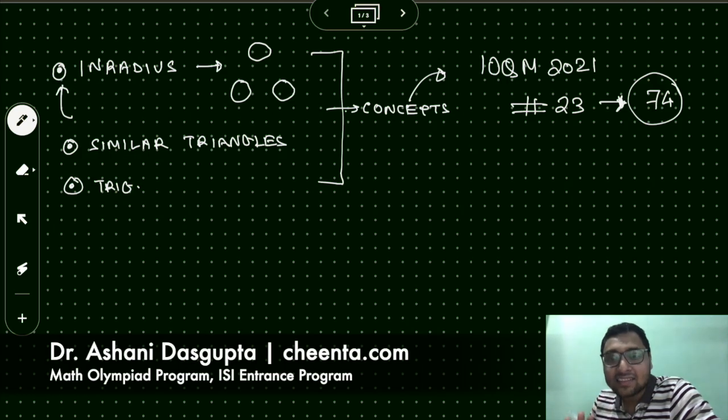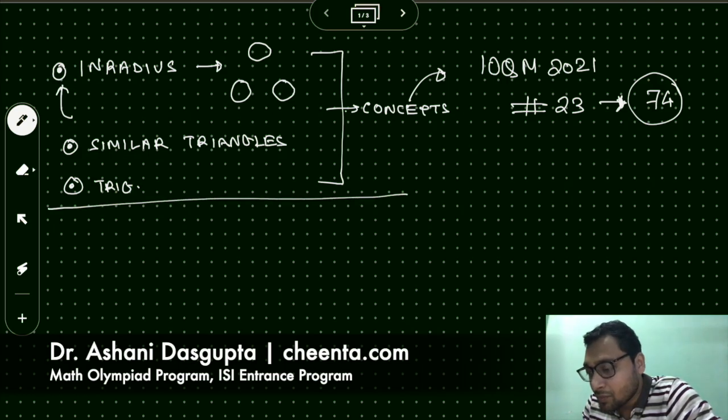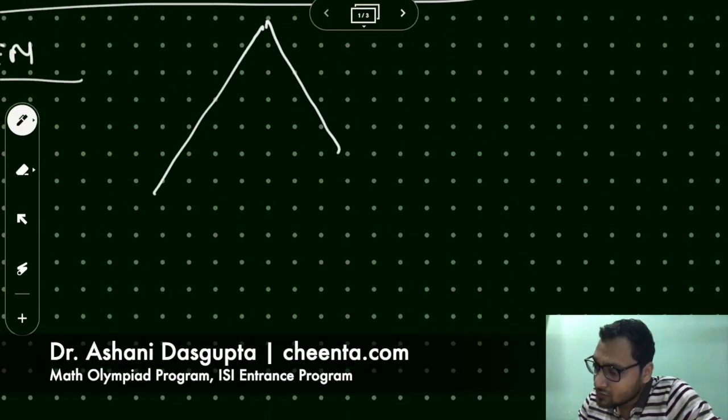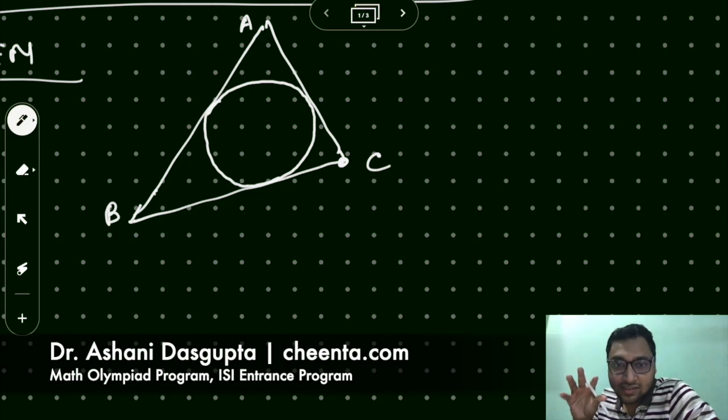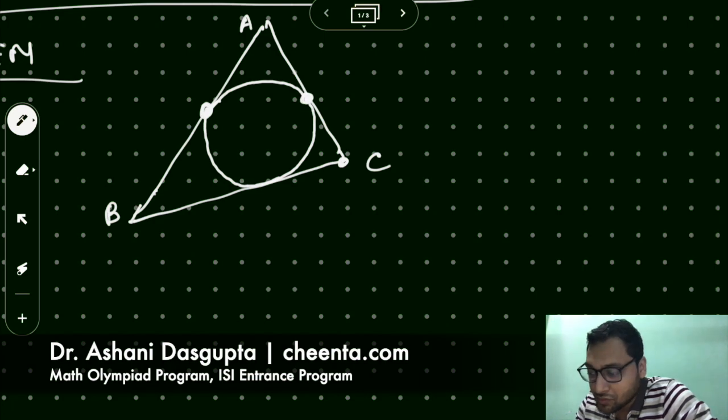So first as motivation let me tell you what the problem is. We have a triangle, I can zoom it a little bit more. Let's call it ABC. It's a scalene triangle and we have a circle. If you don't know what an in circle is, it's very simple. You have a circle to which the sides of the triangles are tangent to, and there is a way to draw this circle using the angle bisectors. I'm not going into that at the moment.